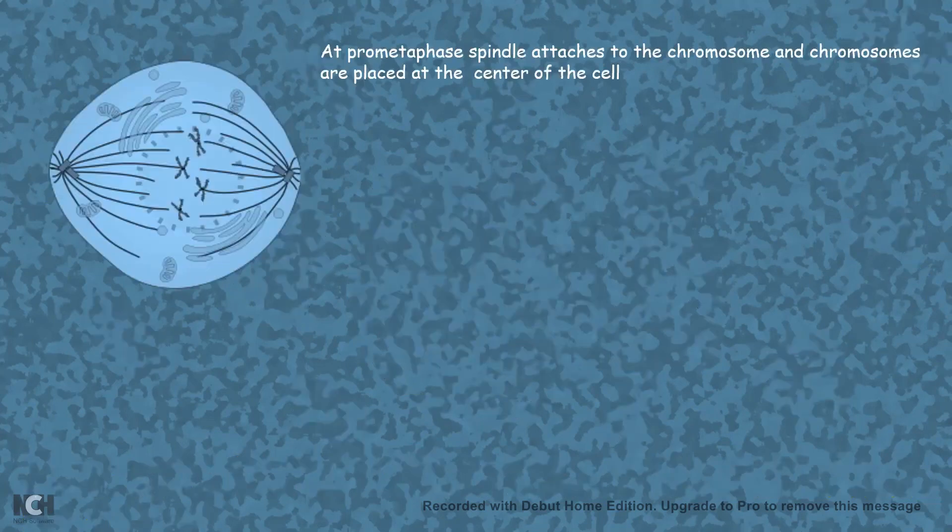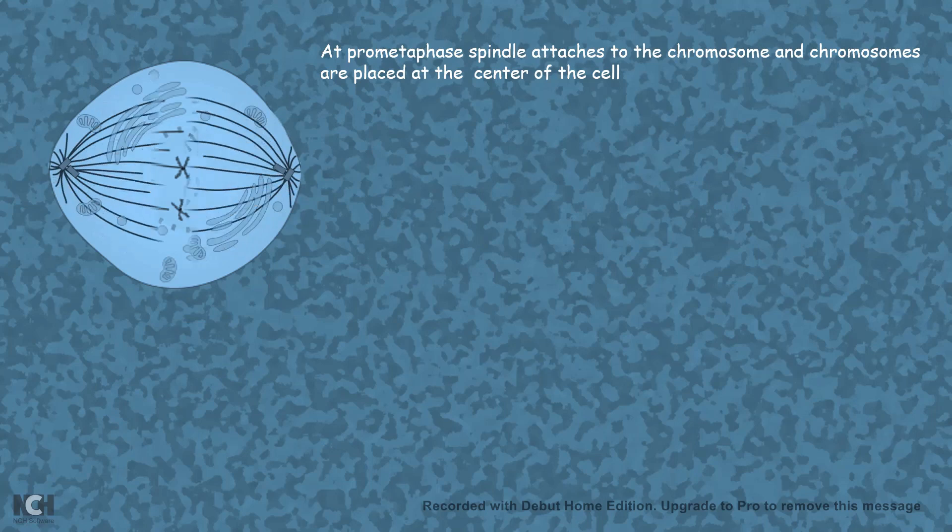At pro-metaphase stage, the spindles from the microtubule organizing center move towards the center of the cell in search of chromosomes. The microtubules get attached to the chromosomes at their kinetochores and try to align the chromosomes to the center of the cell, which is known as the metaphase plate.